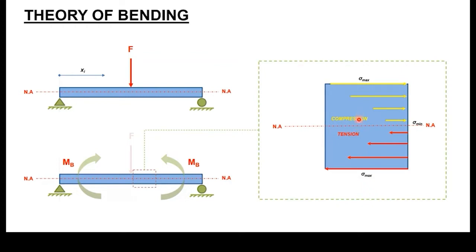Depending on how far you want to identify the measure of stress, that will depict the value of Y. To calculate where the highest compressive stress is, it's simply the distance from the neutral axis to the outermost surface experiencing compression. It's vice versa for the section experiencing tension — that will be the distance from the neutral axis to its outermost surface.